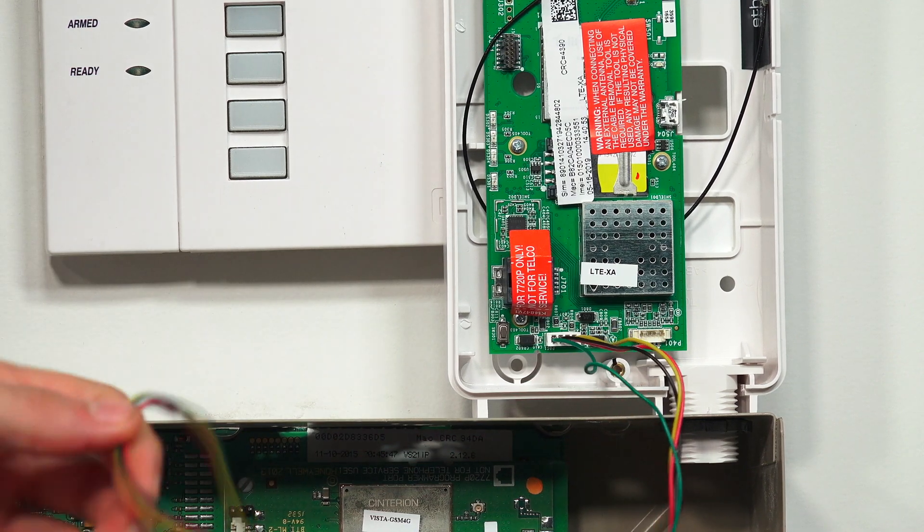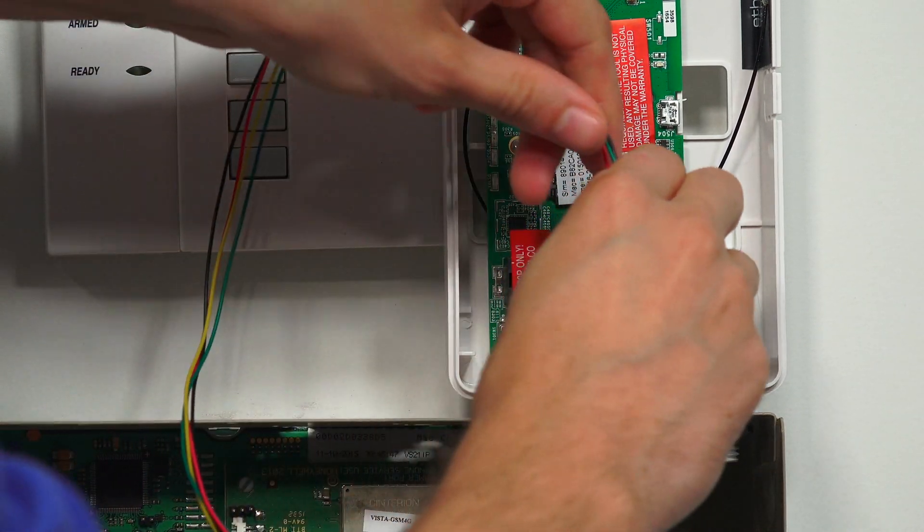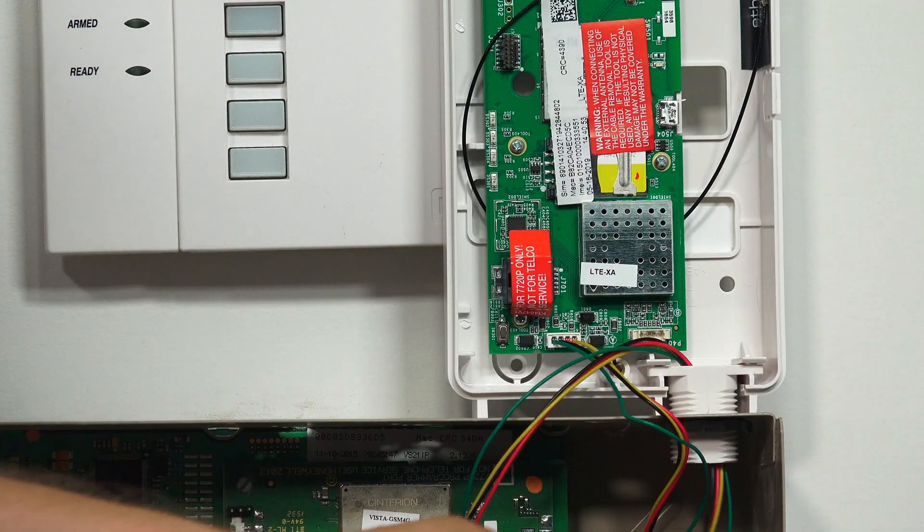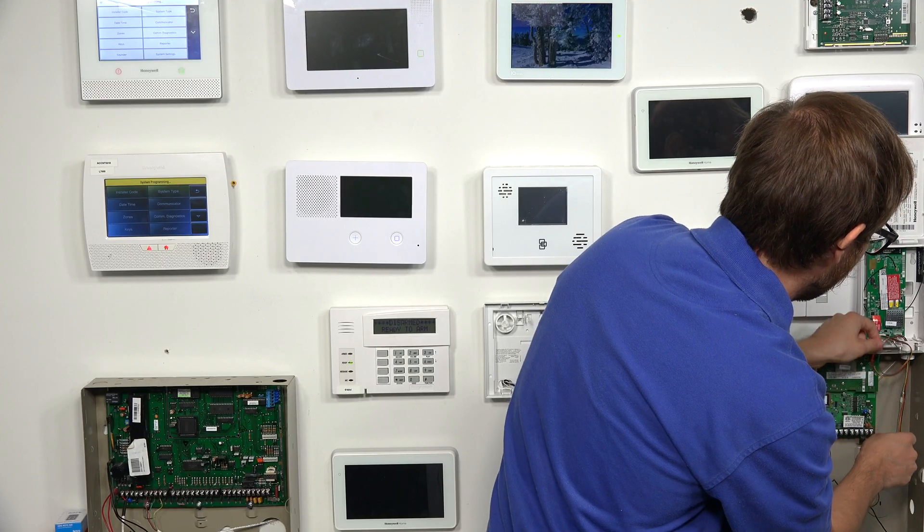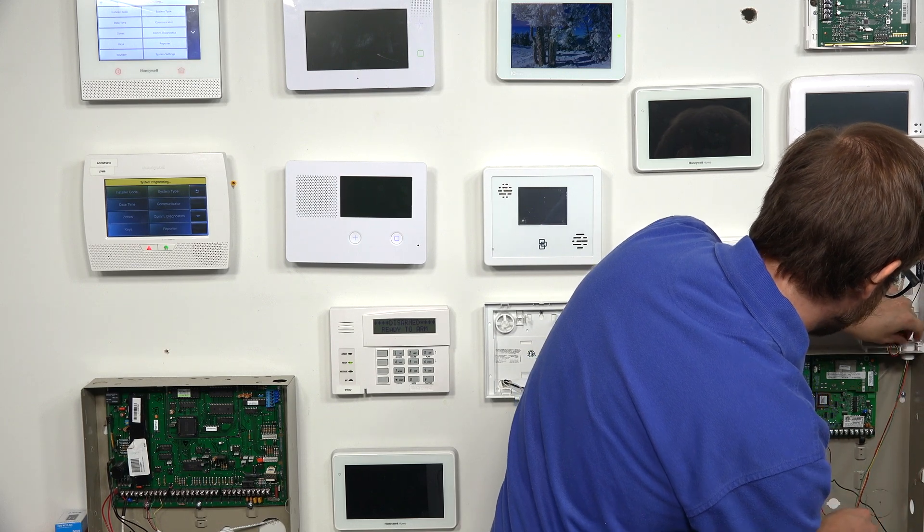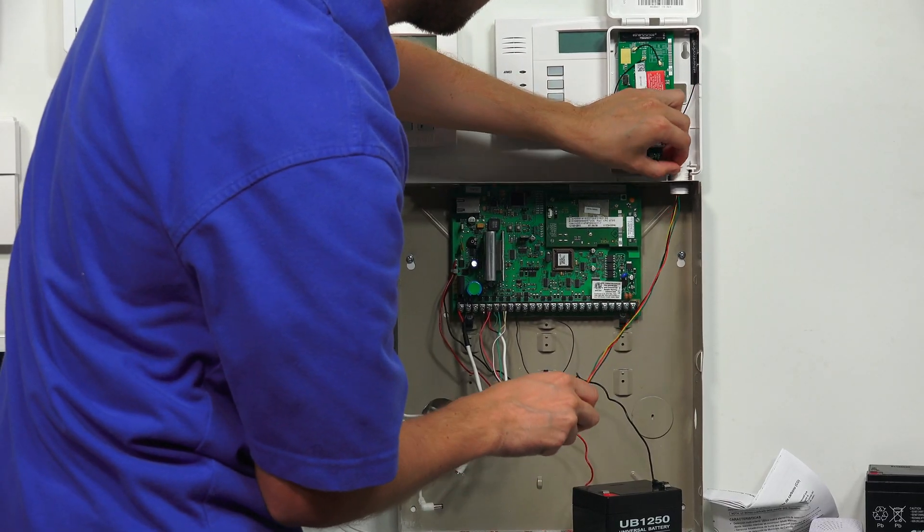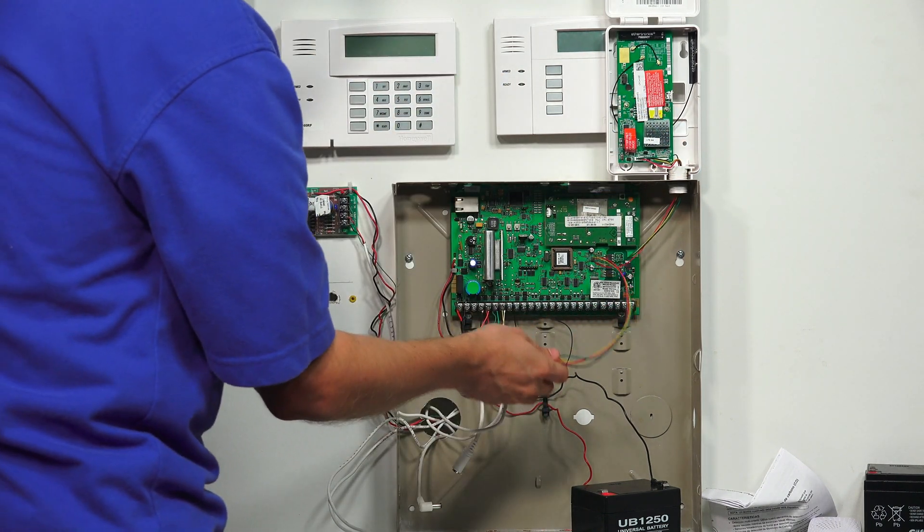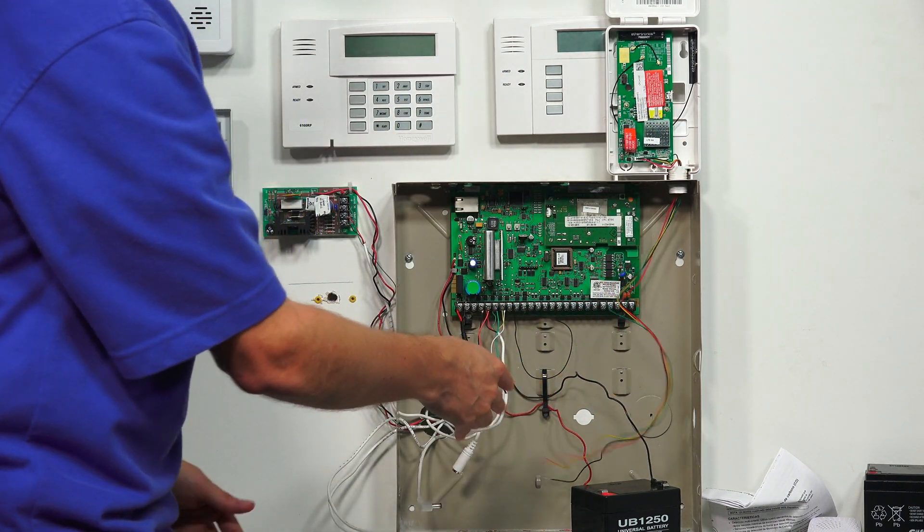So now we're going to take our wires, and we're going to just run them through the hole here, and just pull everything together, make sure it's not caught on your system's communicator. So we've got our wires run through, and now we can begin connecting at the panel.